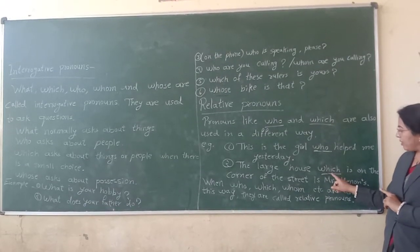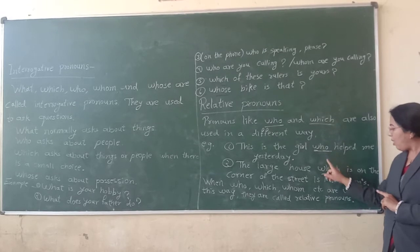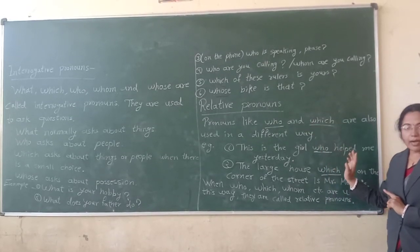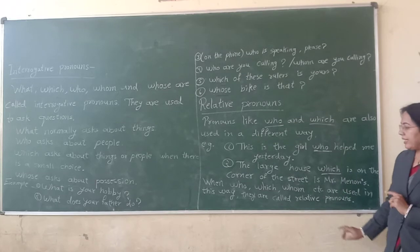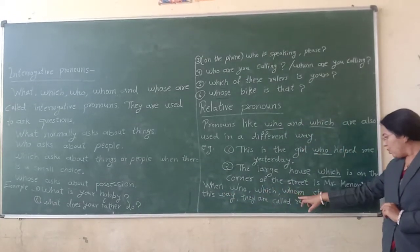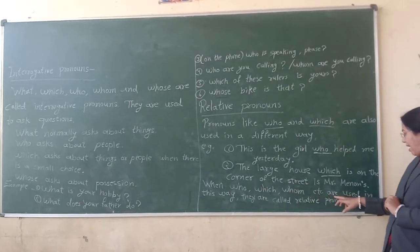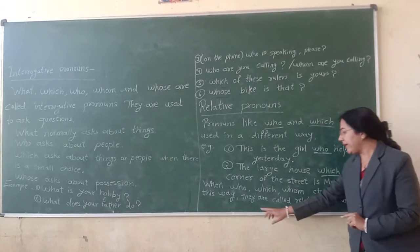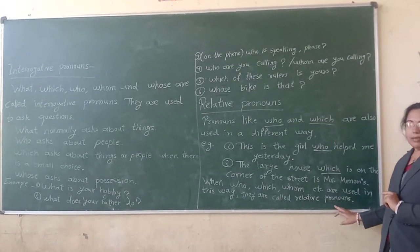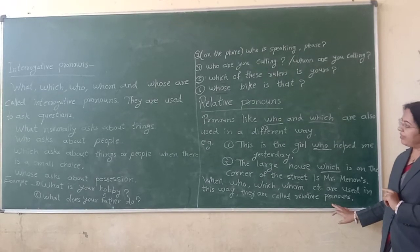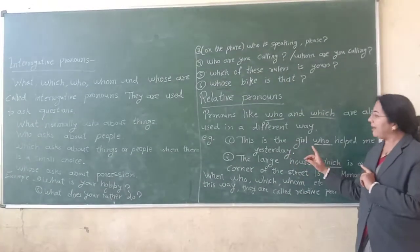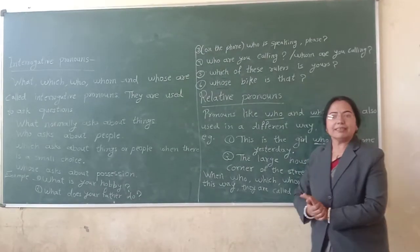This is why we have used the words who and which as relative pronouns. When who, whom, which, etc. are used in this way, they are called relative pronouns. I hope you understood the difference between interrogative pronouns and relative pronouns. Thank you.